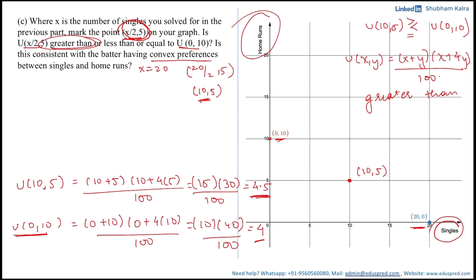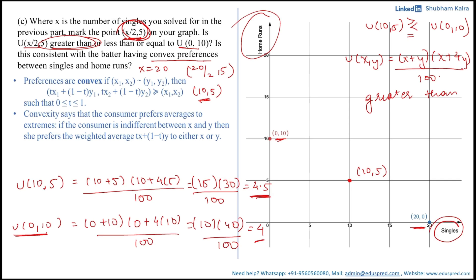Let's come to the last sub-part: are the preferences convex or not? The definition of convex preferences states that if consumption bundle (x1, x2) is indifferent to bundle (y1, y2), then the weighted average bundle — evaluated as (t·x1 + (1−t)·y1, t·x2 + (1−t)·y2) — is weakly preferred to (x1, x2) for all t between 0 and 1, inclusive.